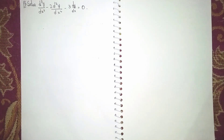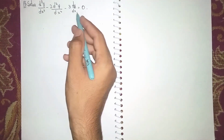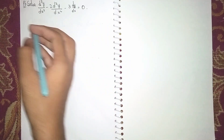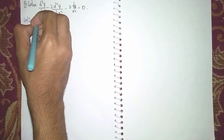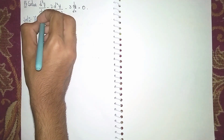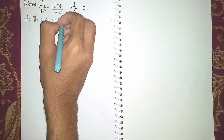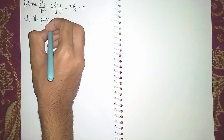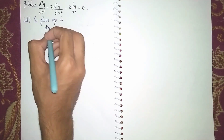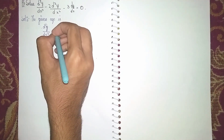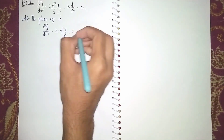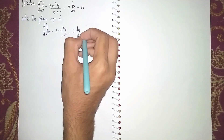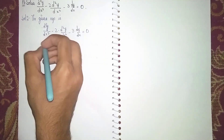Hello students, welcome back to my channel. The question to be solved is: d³y/dx³ minus 2 times d²y/dx² minus 3 times dy/dx equals zero. This is a homogeneous linear differential equation. First, write the given equation.